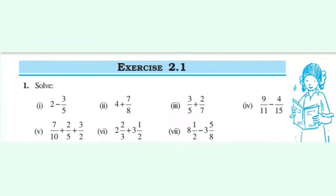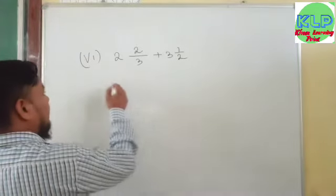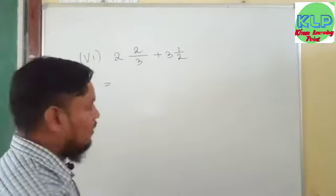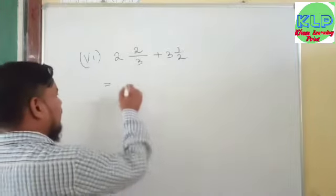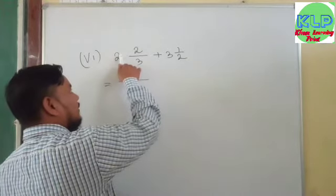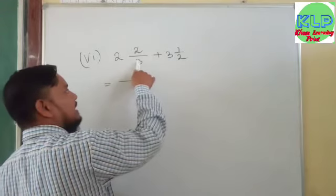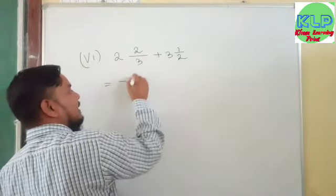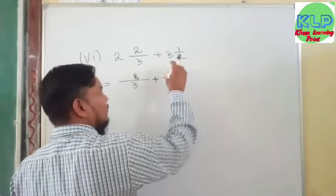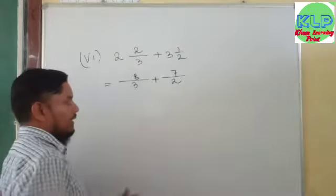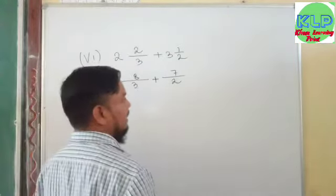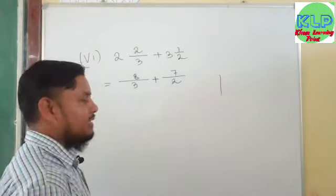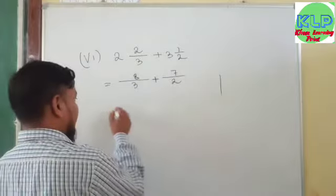One more question: 2 and 2 upon 3 plus 3 and a half. Both are mixed fractions, so first we convert them to improper fractions. For 2 2/3: denominator is 3, multiply whole number 2 by 3 to get 6, plus numerator 2 equals 8. So 8 upon 3. For 3 1/2: denominator is 2, multiply 3 by 2 to get 6, plus 1 equals 7. So 7 upon 2. The denominators are 3 and 2 — both prime numbers, so LCM is their product: 3 times 2 equals 6.